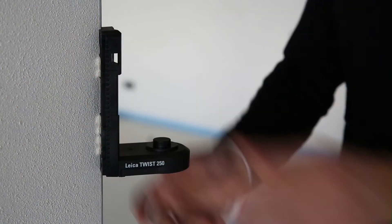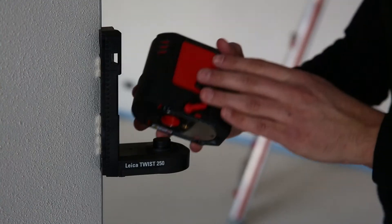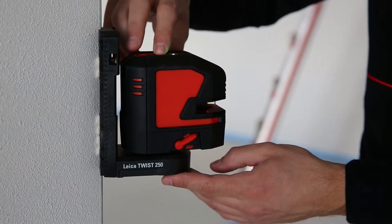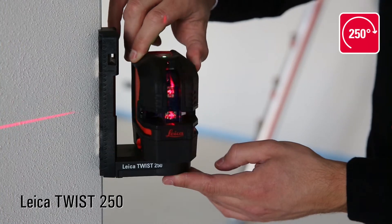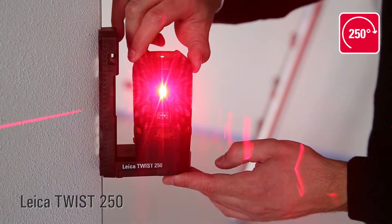Our strong magnets make it possible to attach the Lino even to metal corners. Turn your L2 or L2G on the Twist 250 up to 250 degrees.